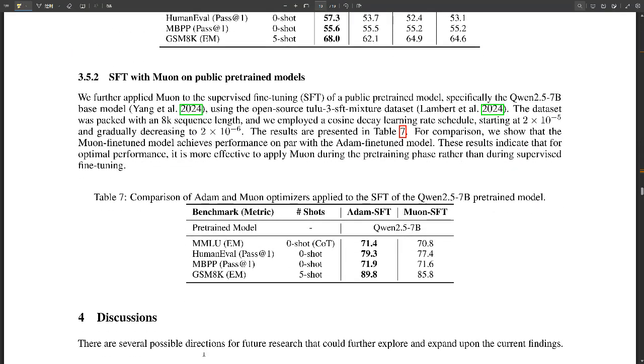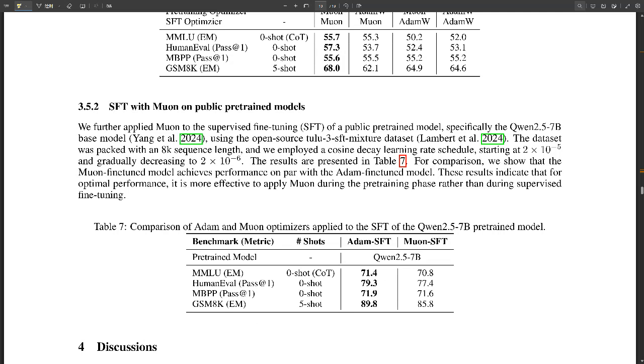Absolutely. And to really understand Muon's potential impact, I think we need to circle back to Moonlight. That's the model that was trained with Muon. Right. And its really unique architecture. Remember, we talked about the mixture of expert or MoE design earlier? Yeah, you piqued my curiosity with that one. Can you break down what makes MoE so special and how it plays into Moonlight's performance?